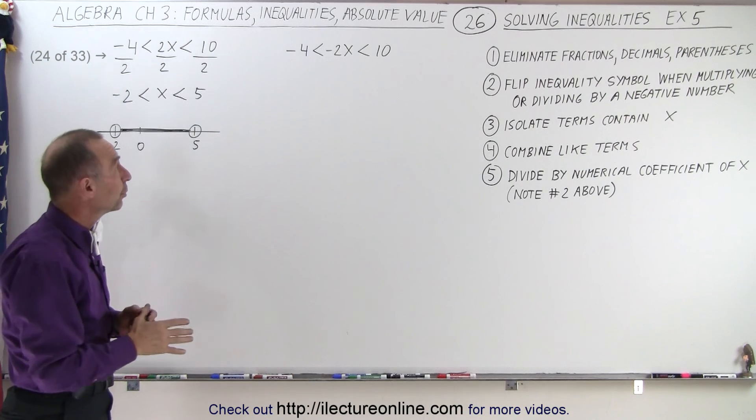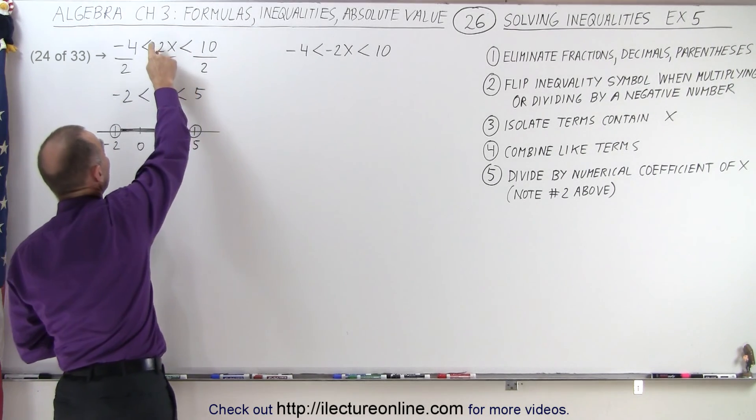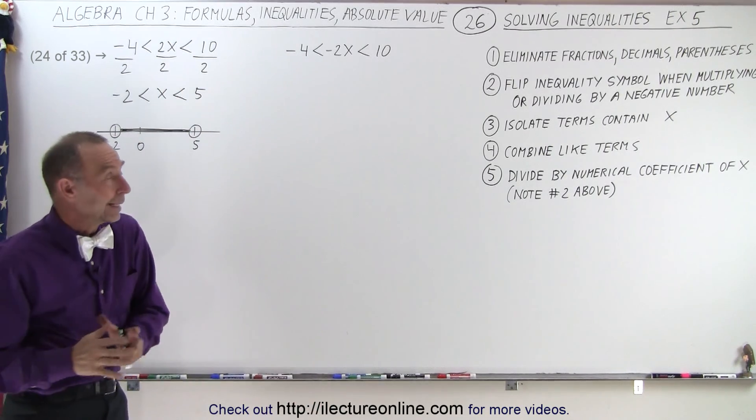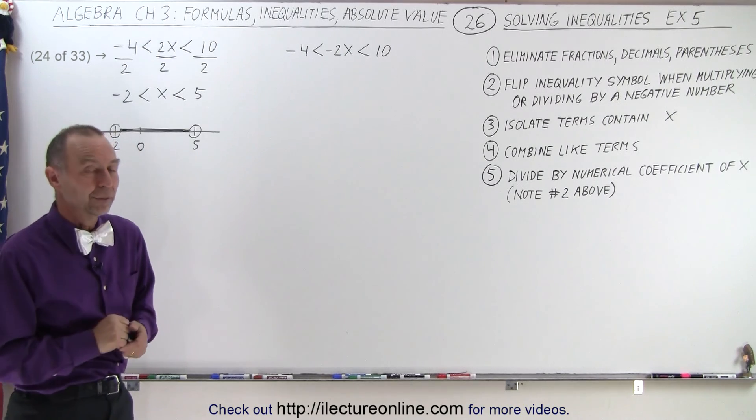Now what we're going to do is solve that equation. The only difference is, instead of having a positive 2x here, we have a negative 2x, which means we're going to have to divide by a negative number, which means we're going to have to flip the inequality symbols.